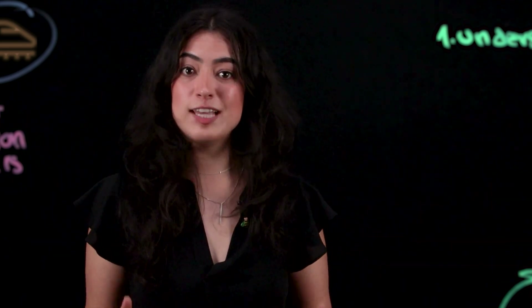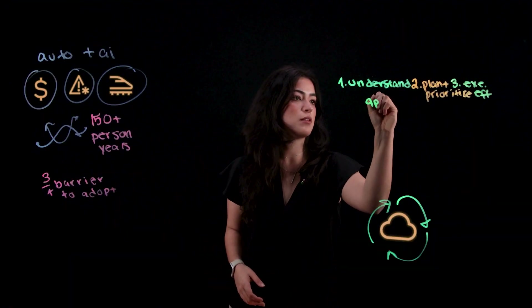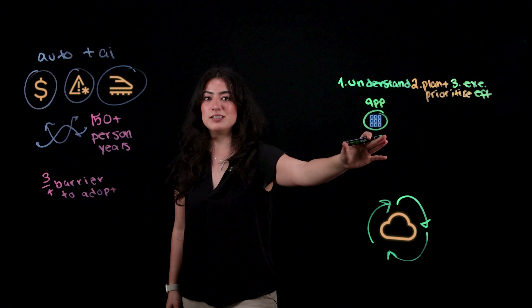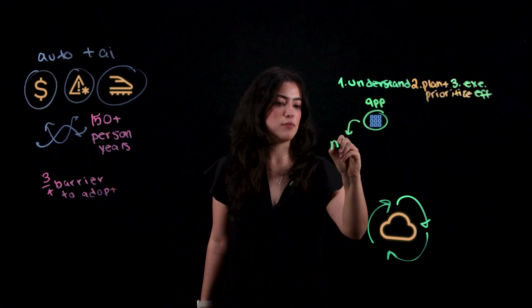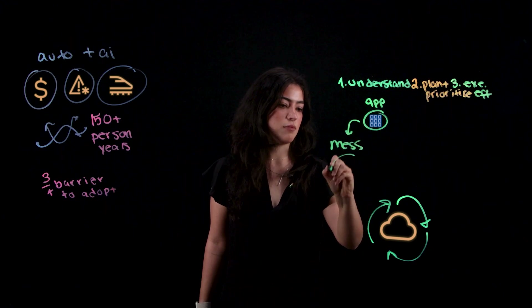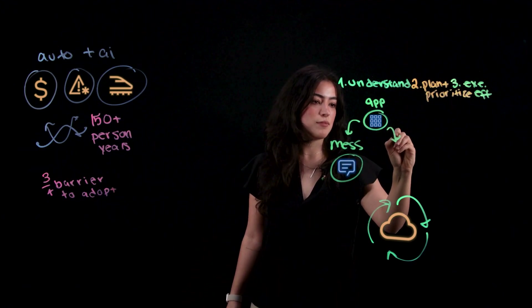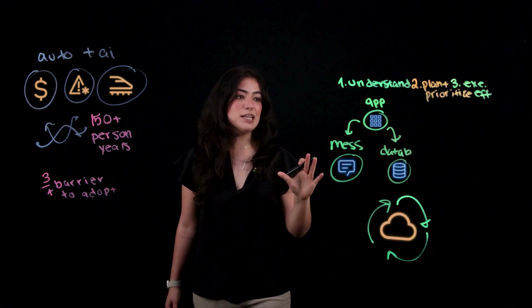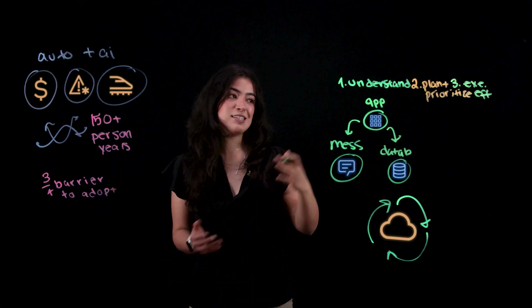The first step is understanding — discovering and visualizing your application state, and identifying dependencies. This isn't just about the applications; it's about what the applications use. We need to visualize this to be able to plan and prioritize, which brings us to the next step.